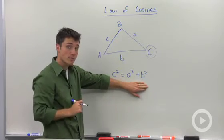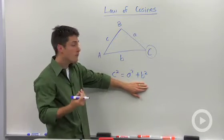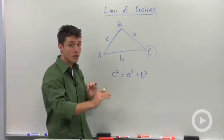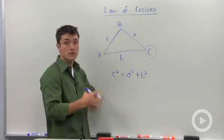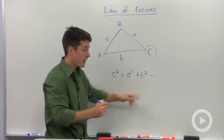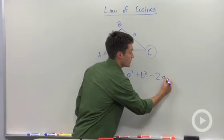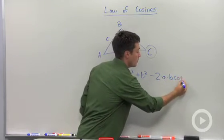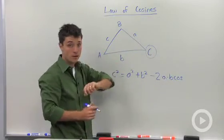So right now it kind of looks like the Pythagorean theorem. And what the law of cosines really does is it adjusts the Pythagorean theorem to fit any kind of triangle. And that fitting is where we subtract 2 times A times B times the cosine of whatever angle you're talking about.